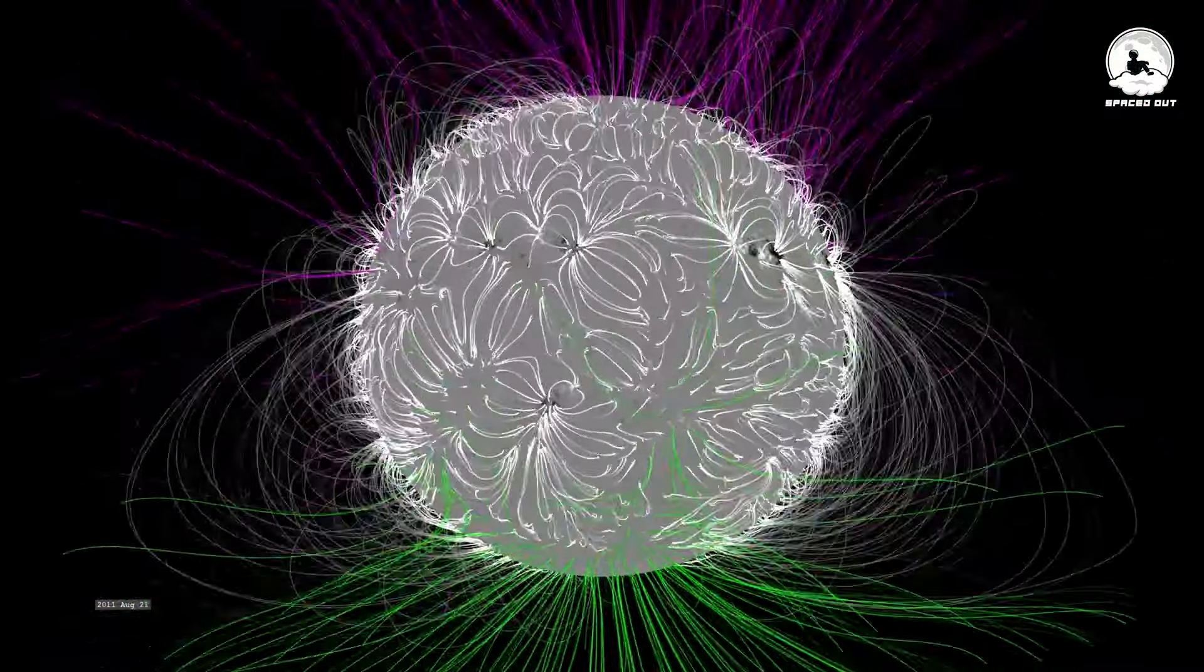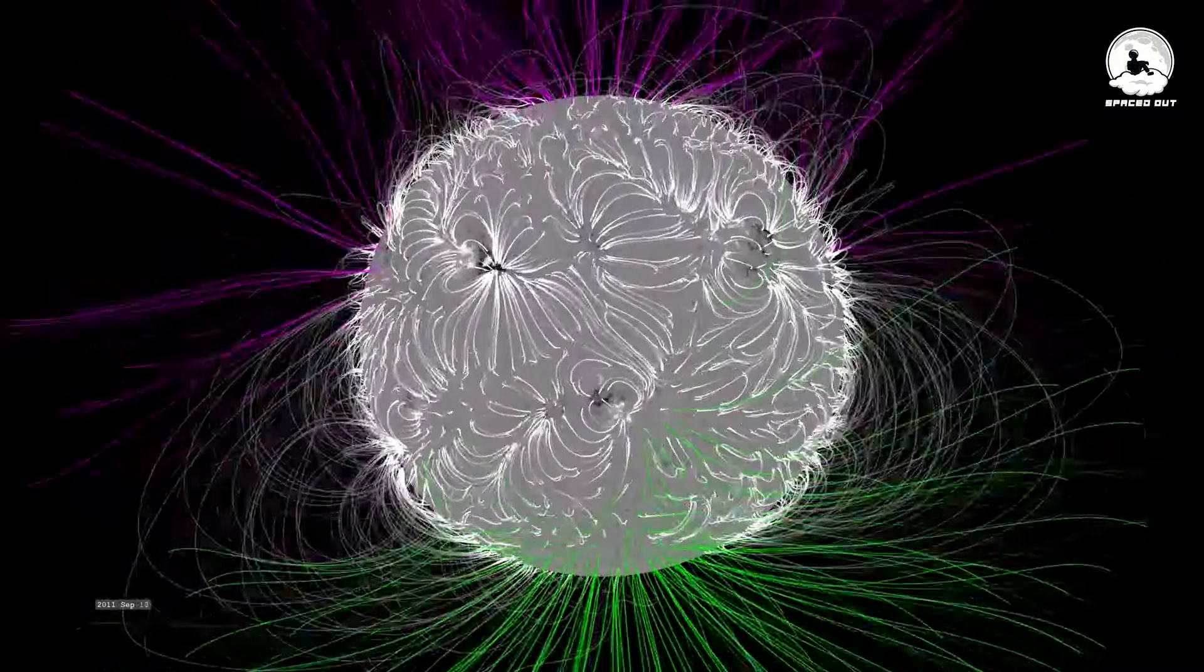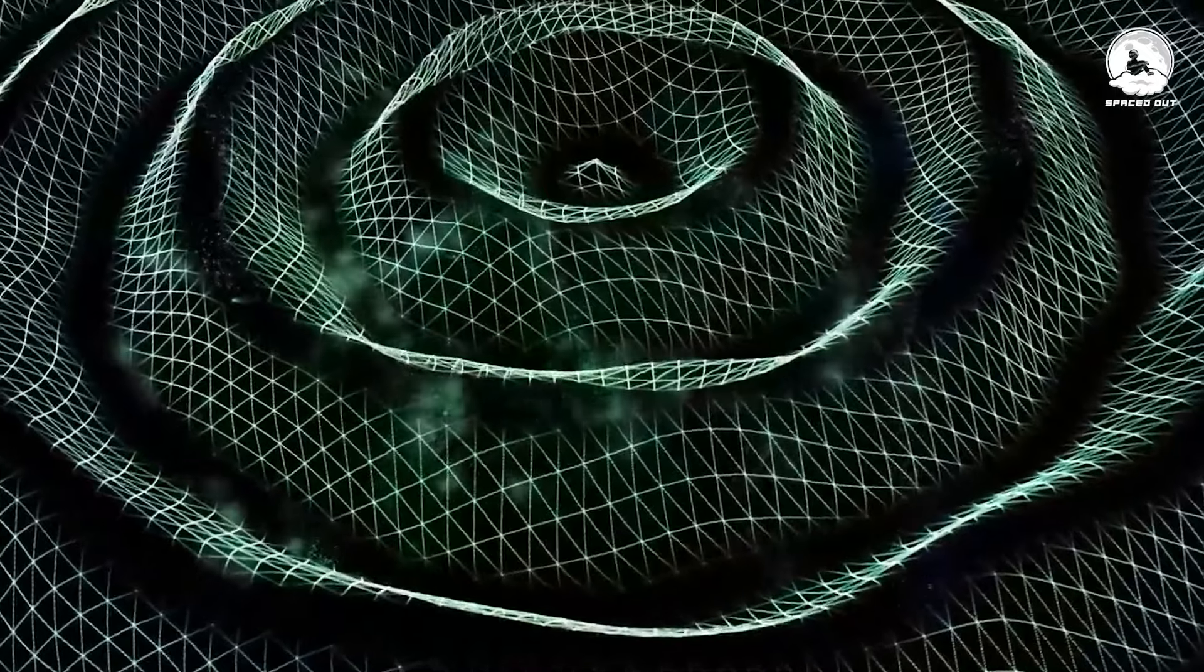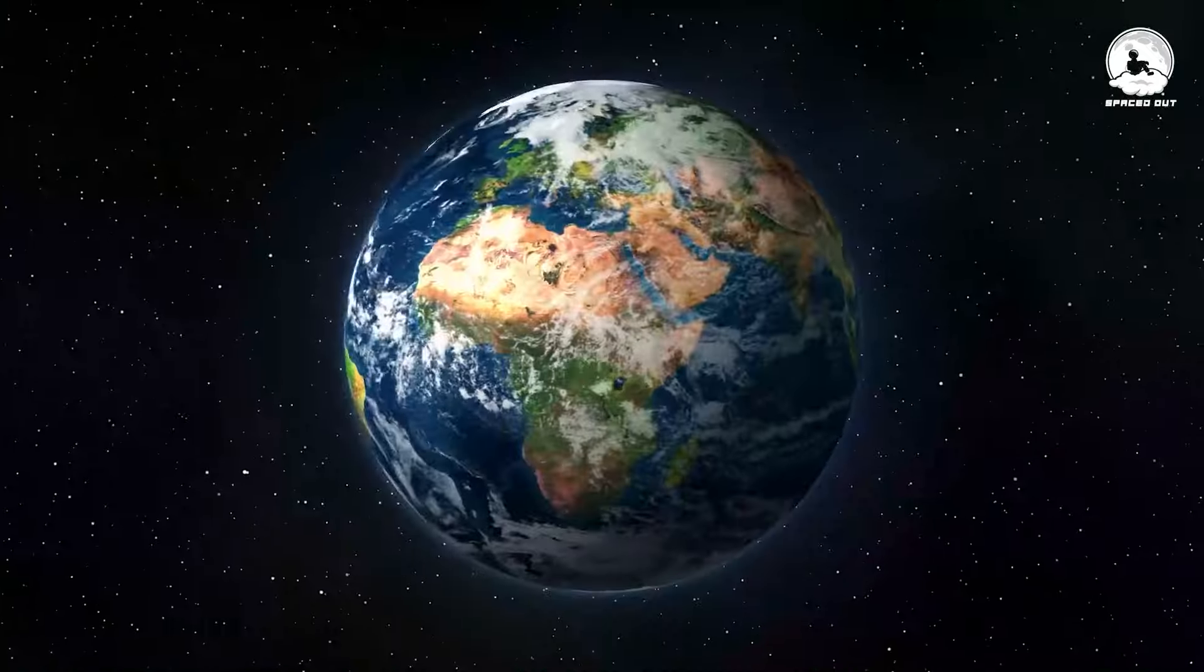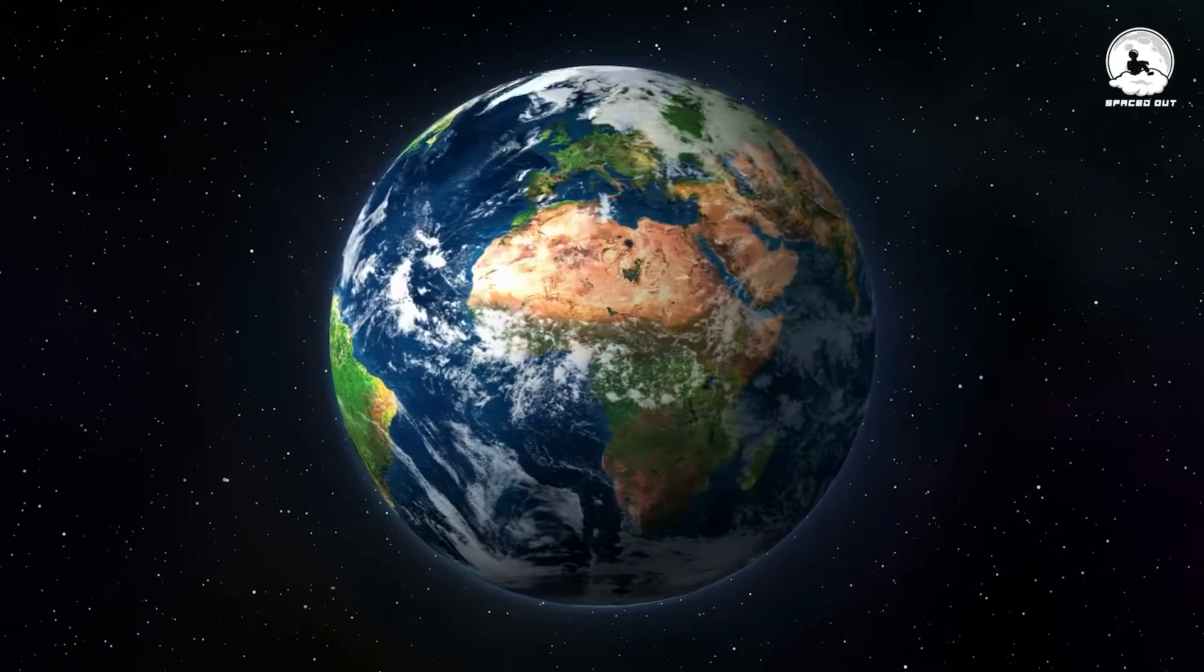However, it's essential to note that geomagnetic reversals are not sudden events. They are gradual processes that unfold over thousands of years, with durations ranging from 1,000 to 10,000 years.